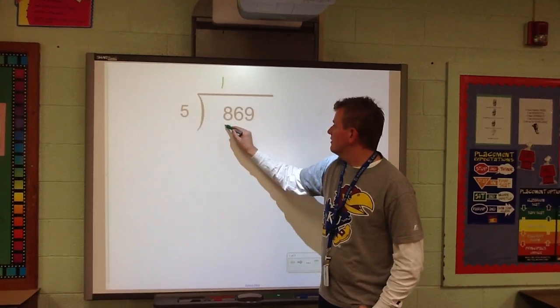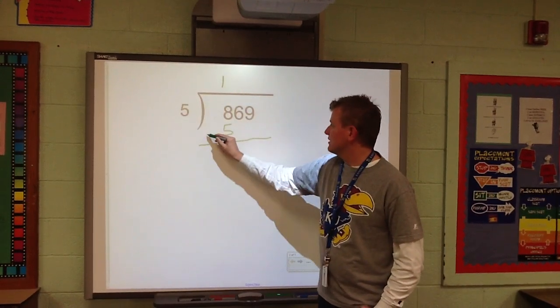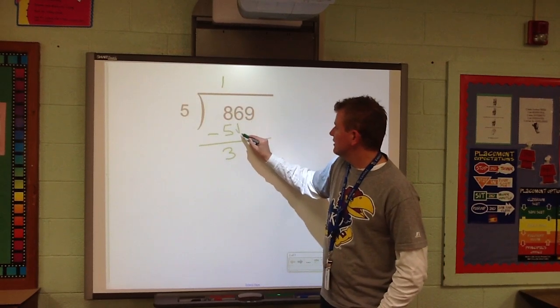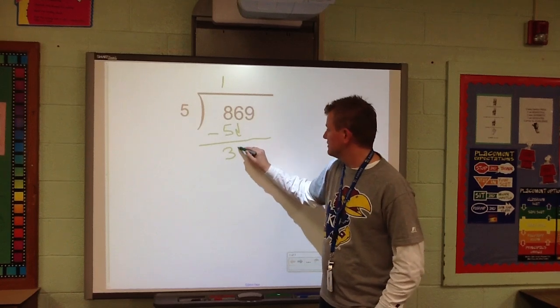1 times 5 is 5. I'm going to subtract. 8 minus 5 is 3. And then I'm going to bring down just the next number over, which is 6.